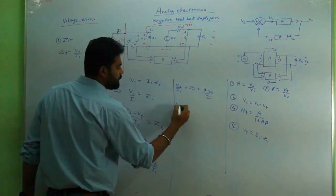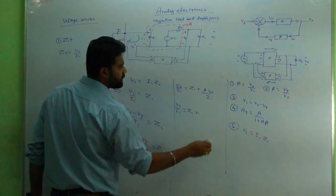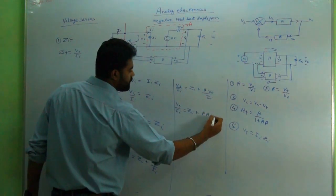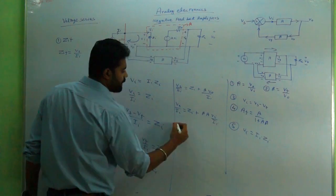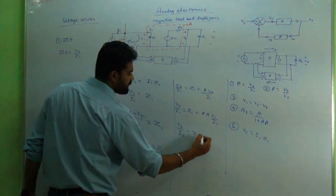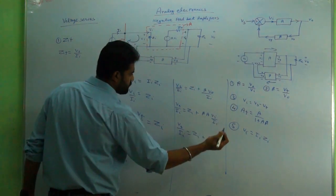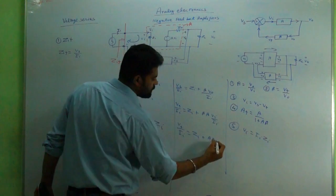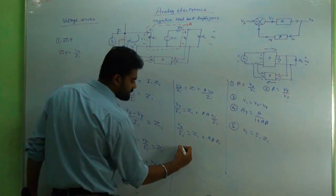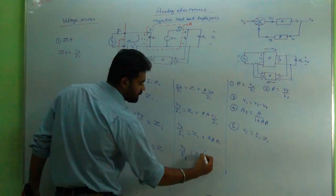And ultimately it leads us to Vf can be written as A times Vi, that is β times A times Vi/Ii. Thus Vs/Ii can be written as Zi + Aβ(Vi/Ii), which is already been written as Zi.